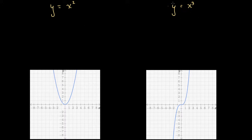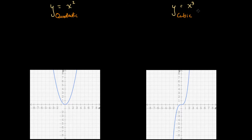Here we have two different functions that have been graphed: y equals x squared and y equals x cubed. This presentation is designed mainly to introduce features of the y equals x cubed graph. This is a cubic function, whereas y equals x squared is a quadratic function. We're going to examine the similarities and differences between these two graphs and functions, and in doing so we'll learn why they look the way they do.